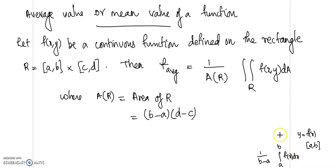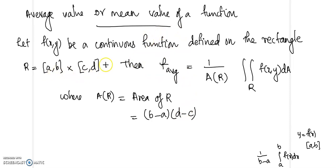When we come to the case of a double integral, the average value of a function is defined as (1 divided by the area of region R) times the double integral over R of f(x, y) dA. The area of R is obtained by length times width, so that will be (b−a) times (d−c). We have already seen how to evaluate this integral.